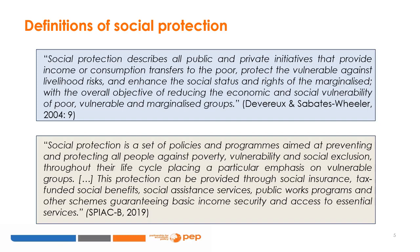A commonly used and broad definition provided by Devereux and Sabates-Wheeler in their 2004 paper reads: social protection describes all public and private initiatives that provide income or consumption transfers to the poor, protect the vulnerable against livelihood risks, and enhance the social status and rights of the marginalized, with the overall objective of reducing the economic and social vulnerability of poor, vulnerable, and marginalized groups. In other words, social protection can be understood as programs that support those living in poverty by providing cash or food transfers, protecting everyone vulnerable against livelihood risks such as illness or unemployment, and helping to improve the status of those who are excluded and marginalized.